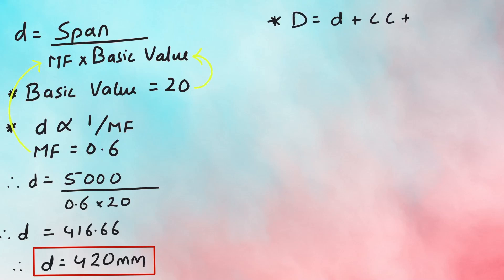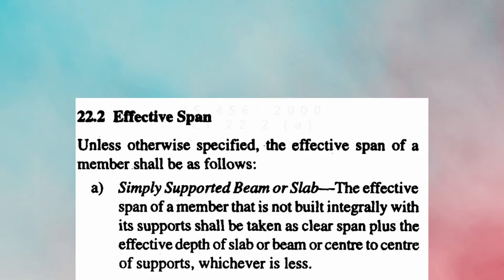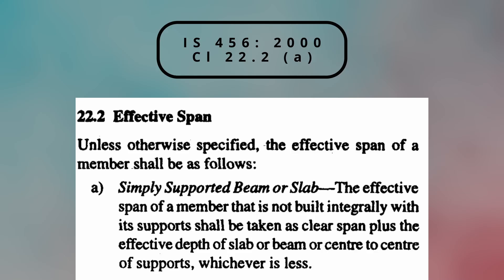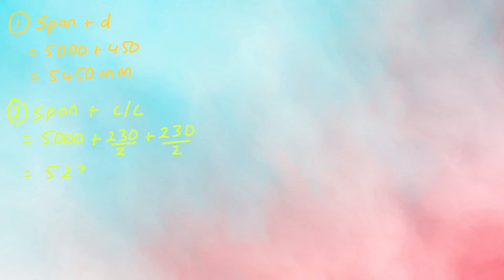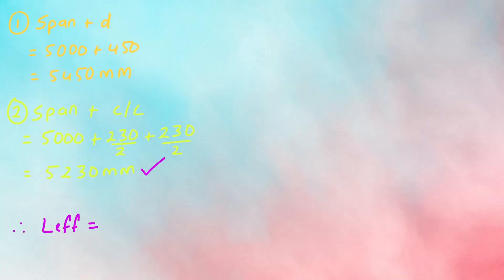The total depth D is the effective depth plus clear cover plus half the diameter, which equals 450 mm. The effective length is calculated as per Clause 22.2a, which states the effective span shall be taken as clear span plus the effective depth — that is 5000 plus 450 mm, equaling 5450 mm. Or, center to center of supports: 5000 plus 230 by 2 twice, equaling 5230 mm. The lesser of the two is taken, which is 5230 mm.